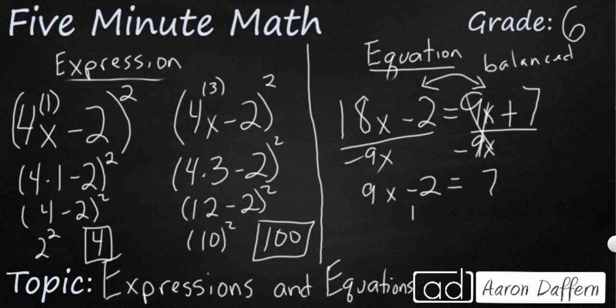Now I'm going to add 2. I'm going to use inverse operations here to go ahead and get that 2 on the other side there. And so I'm going to get 9x, those two cancel out, equals 9.